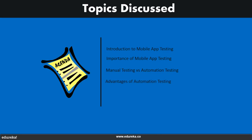Next we will also discuss the advantages of mobile application testing with an automated approach. And in the end, we will discuss the differences between native, hybrid, and web applications. I will also give you a small demonstration as to how mobile applications are tested using a tool called Appium.